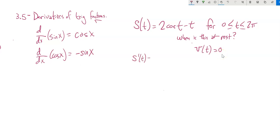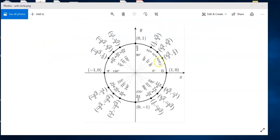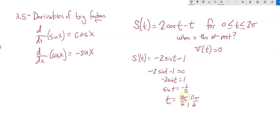The velocity is the first derivative of position. The derivative of 2cos t is negative 2·sine t, and the derivative of t is 1, so v(t) = −2·sin t − 1. Setting this equal to zero: −2·sin t − 1 = 0, add 1 to both sides, divide by −2, giving sin t = −1/2. When is sine equal to negative one-half? From trig, that's at t = 7π/6 and t = 11π/6. Those are the times when it's at rest.